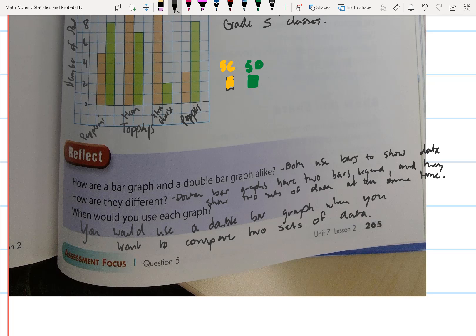So once again, a double bar graph is going to use the same data that you would use in a single bar graph, but the goal of using a double bar graph is to compare two sets of data. So you can make a comparison. That is the main purpose of a double bar graph, and that's why you would choose a double bar graph versus a single bar graph.